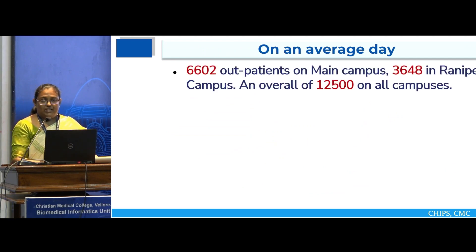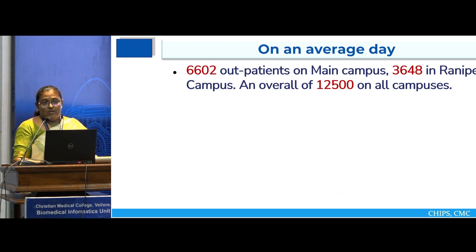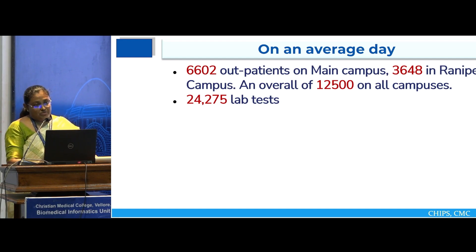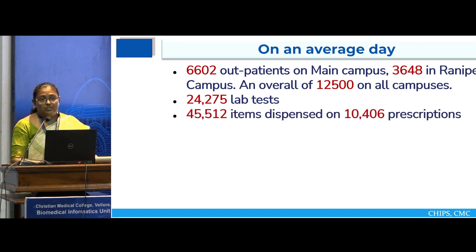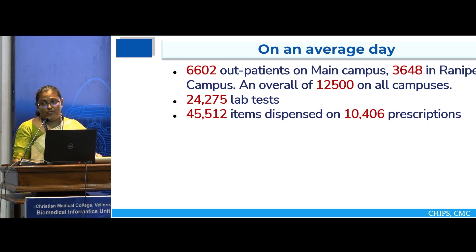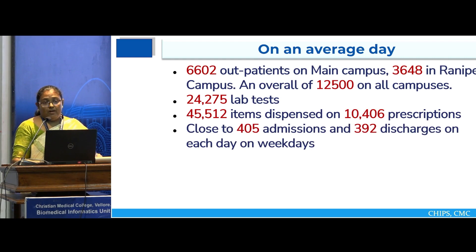On an average day, we get about 6,602 outpatients in the main campus and 3,648 patients in Ranipet campus. Putting all the campuses together, we get about 12,500 patients. We do about 24,275 lab tests, and 45,512 items are dispensed on 10,406 prescriptions. On each weekday, we take about 405 admissions and 392 discharges.